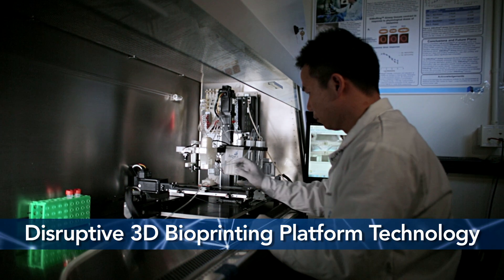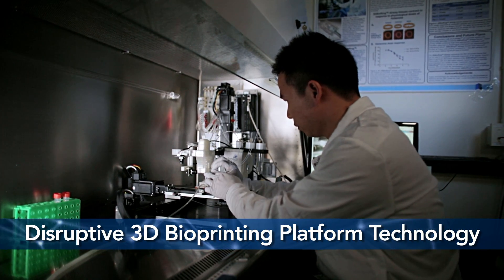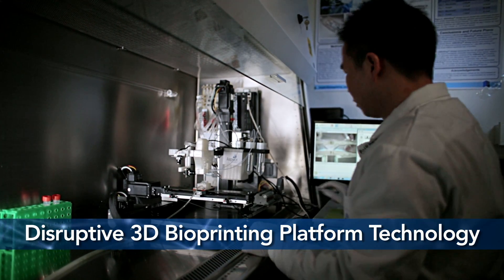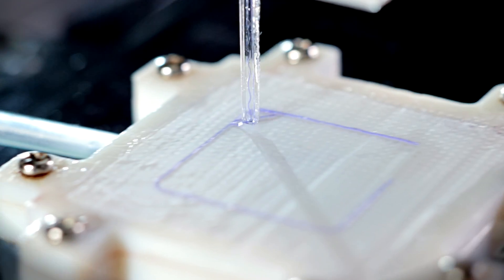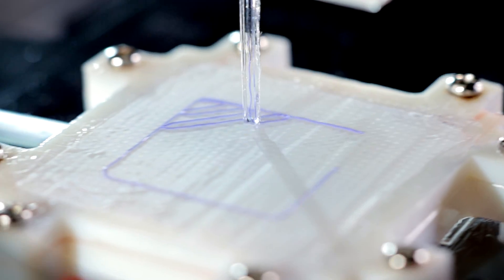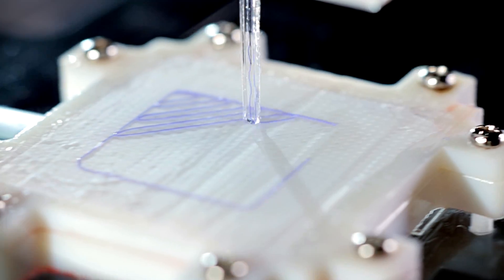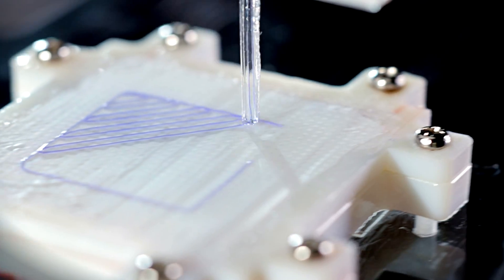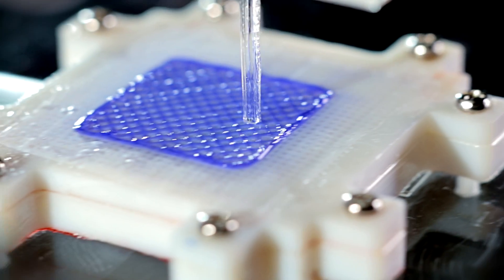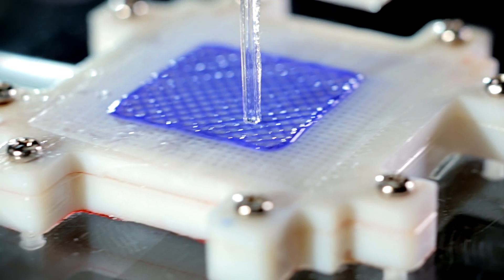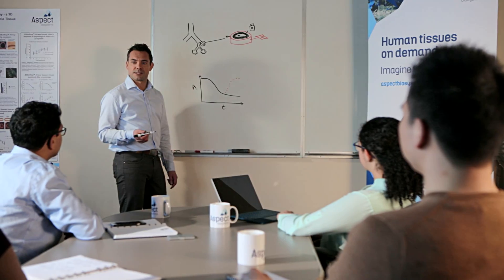Aspect Biosystems is a Canadian biotechnology company building living 3D tissue solutions for the life science industry. Aspect's proprietary lab-on-a-printer platform is one of the most advanced tissue engineering technologies in the world, capable of rapidly 3D printing human cells with biological scaffolds to generate complex living tissues.